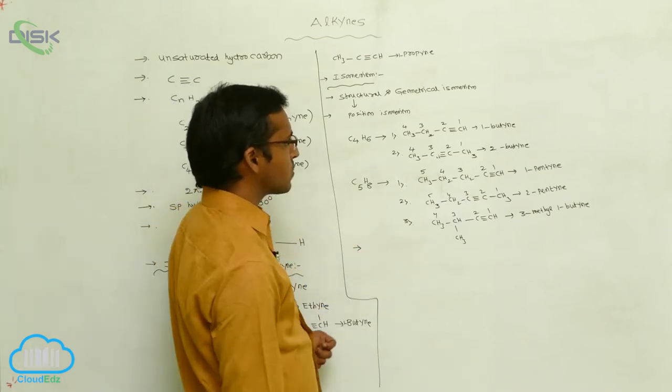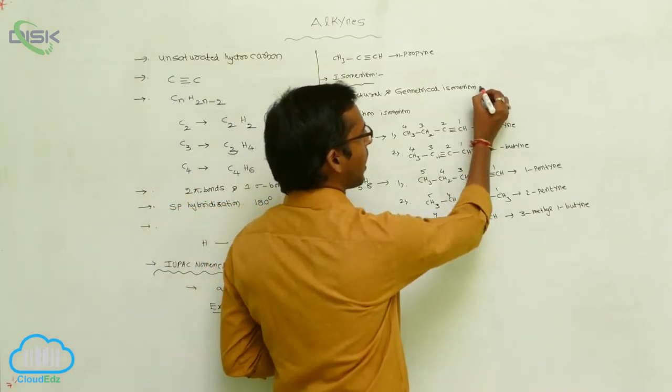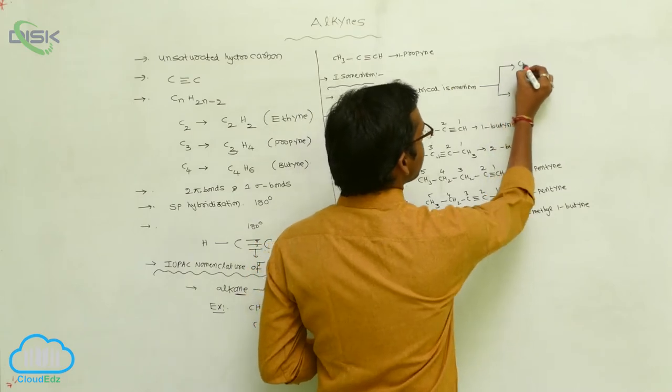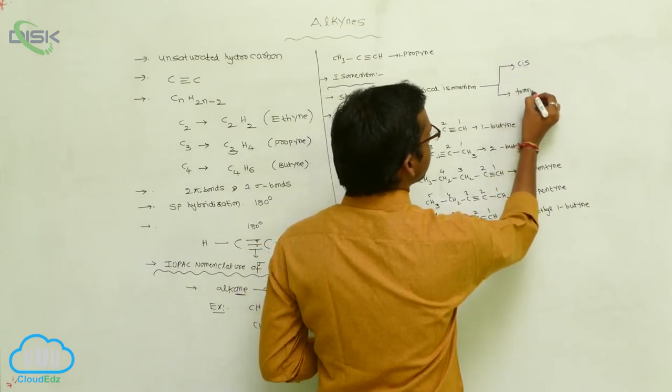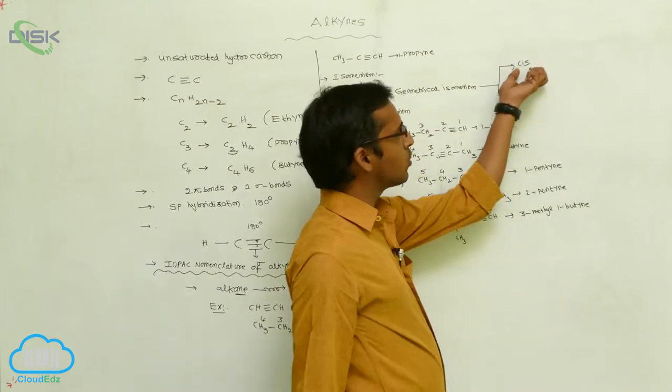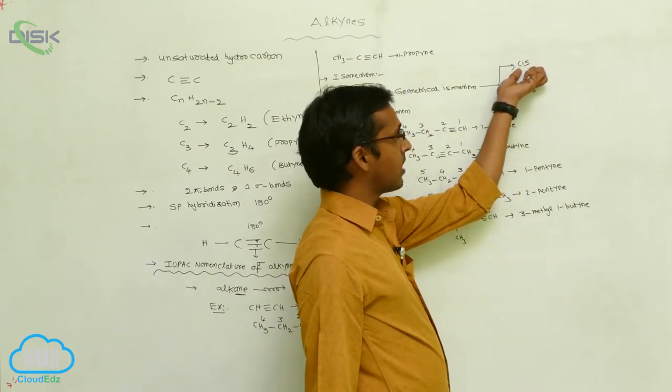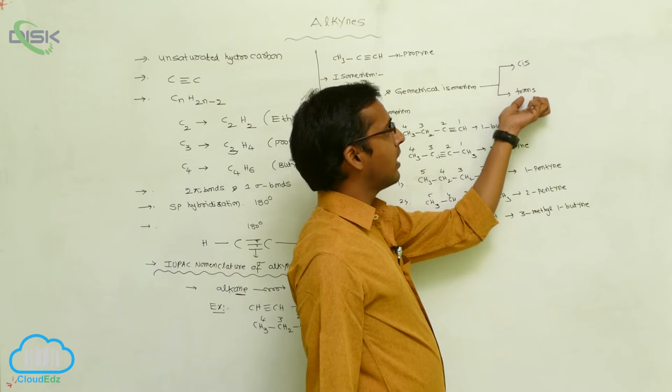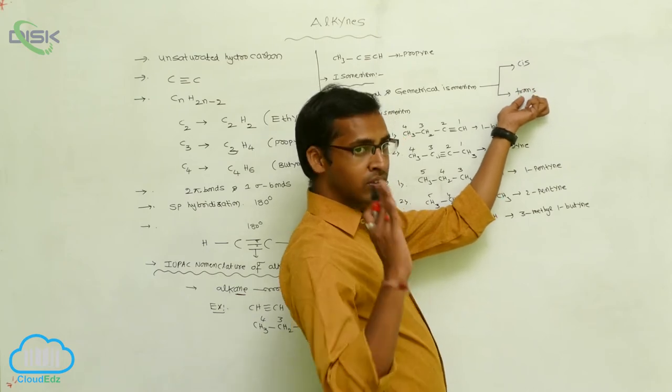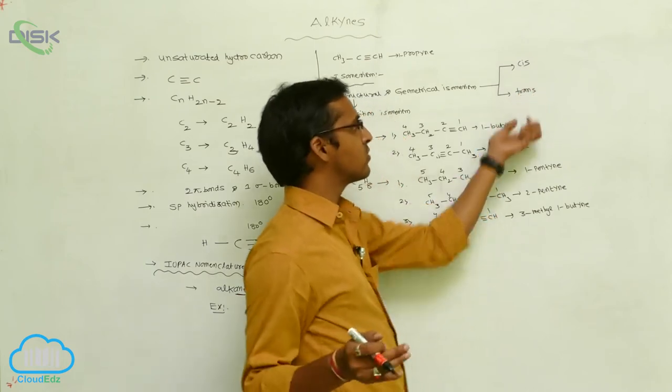Now geometrical isomerism is classified into two types: one is cis isomer, another one is trans isomer. So when the identical atoms or groups are on the same side, that is your cis isomer. The identical atoms or groups around the triple bond on opposite side, that is your trans form.